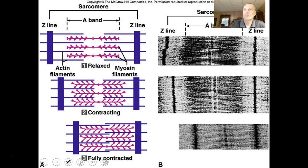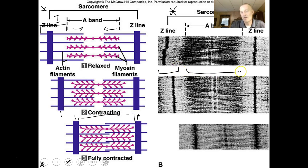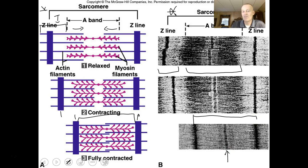Under the electron microscope on the left you have an artist's rendition and on the right electron microscopy. As actin is pulled in, you can see the sarcomeres begin to shorten. Notice what happens to the I-band — the I-band disappears. The A-band gets darker. As you have a muscle contraction, the A-band darkens and the I-band disappears because of the overlap of myosin and actin filaments.